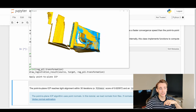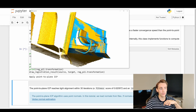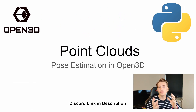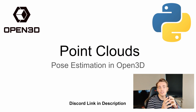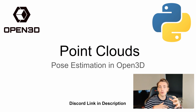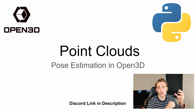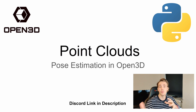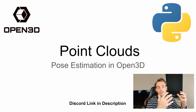The floor here is perfectly aligned, the chair is perfectly aligned, as we can see if we just zoom in. Hey guys, welcome to a new video on this point cloud tutorial. In this video we're going to talk about pose estimation in Open3D — specifically local alignment or local registration. In another video we're going to talk about global registration, and we'll go into details about what these things mean and how we can do pose estimation.